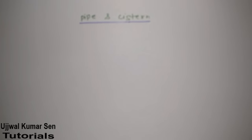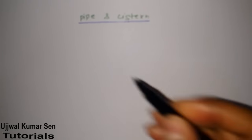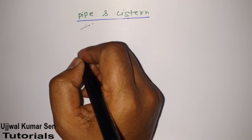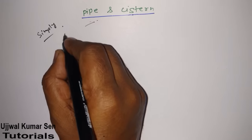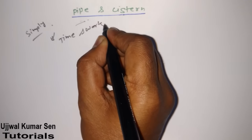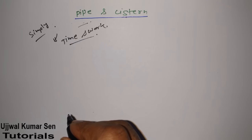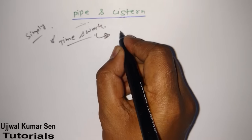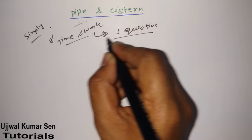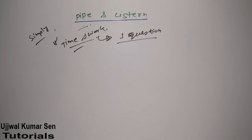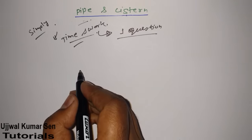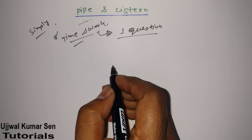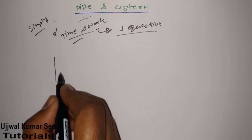This is Ujjal Kumar Sen and in this video tutorial we are going to learn about pipes and cisterns. I have seen questions in GATE from this topic — it falls under time and work. If you are preparing for GATE, this topic is really important. I've seen at least one question from time and work in GATE previous year papers. Time and work and time-speed-distance are the two most important topics for GATE.